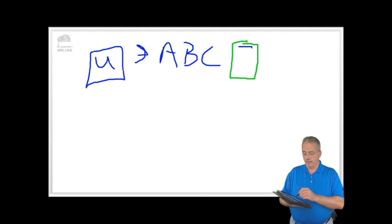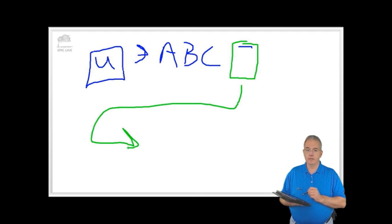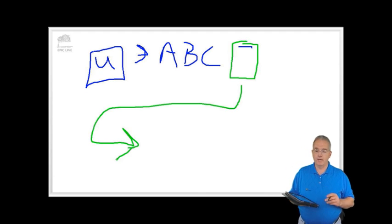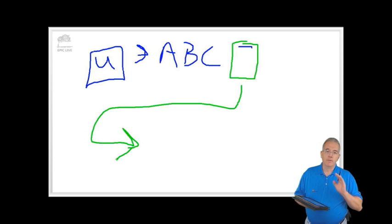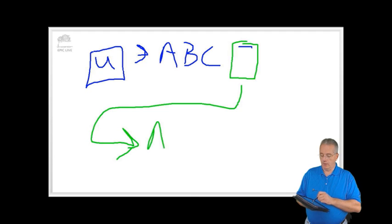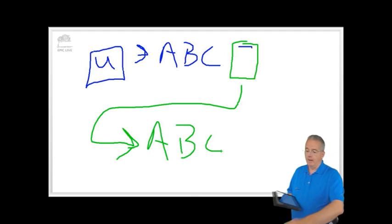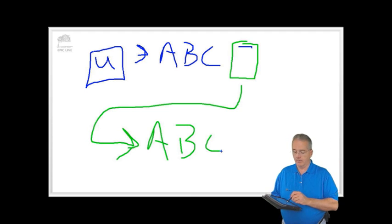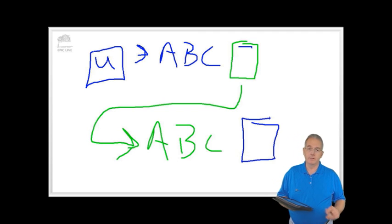So then I transmit the encrypted file over to Susan. And then over the phone I tell Susan, the passphrase is A, B, C. So she knows that it's A, B, C. And then what can happen is it will decrypt the file and then Susan can read it.